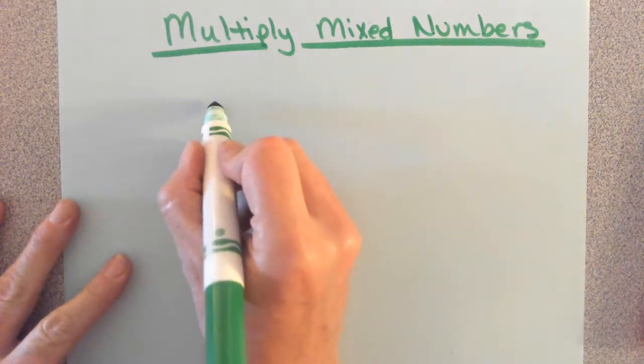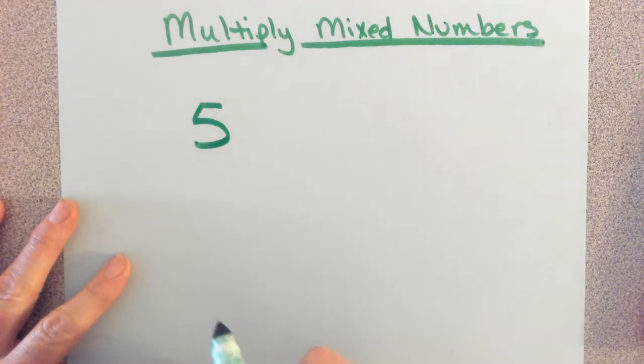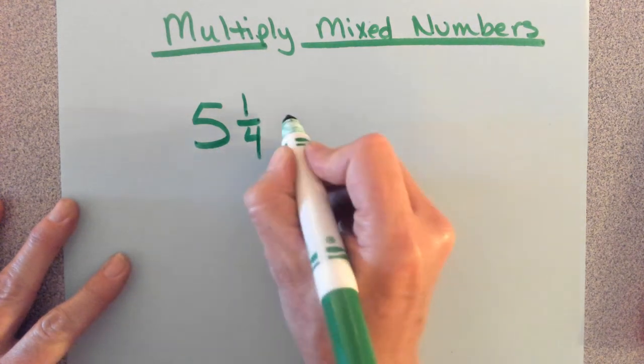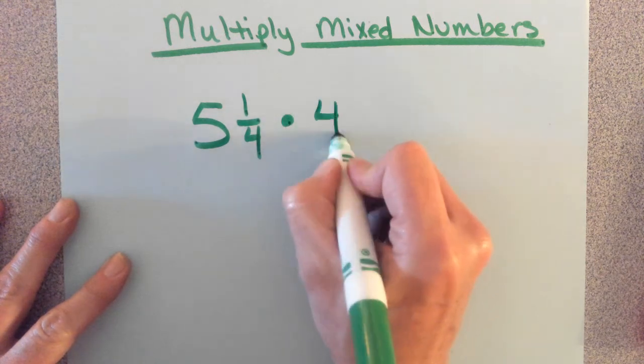Our first question we're going to look at is from number two on today's worksheet. Five and one-fourth times four and two-thirds.